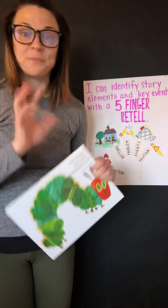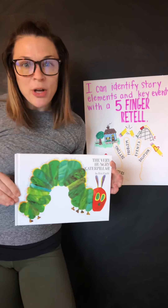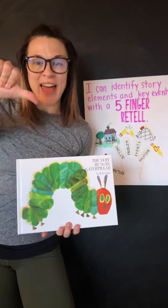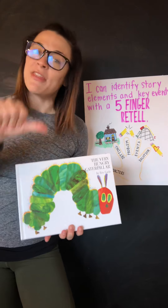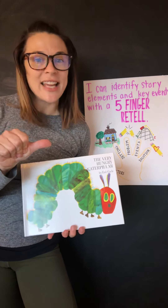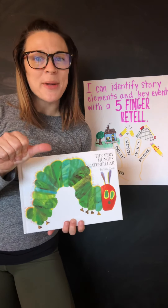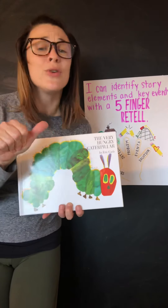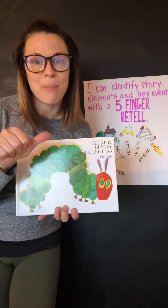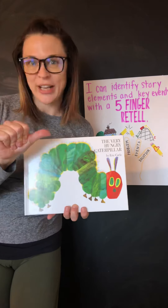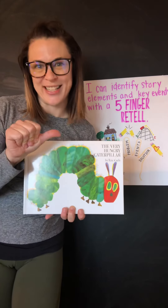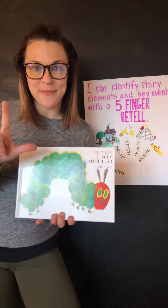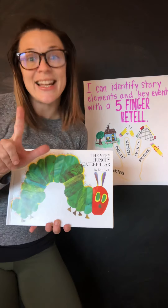In this book we know that there is a character — that's what I'm going to use my thumb for. The character in The Very Hungry Caterpillar is the caterpillar. You could also include the butterfly, since that's what the caterpillar changes into. The setting is an outdoor setting.